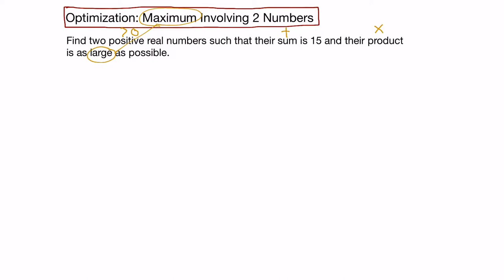Let's start by setting up our variables. We'll let x and y be our two positive real numbers, and they both have to be greater than 0. Now let's set up our equations. The sum is 15, so x plus y equals 15, and we'll call that equation 1. We also know that their product is as large as possible, so product P equals x times y, and we'll call that equation number 2.